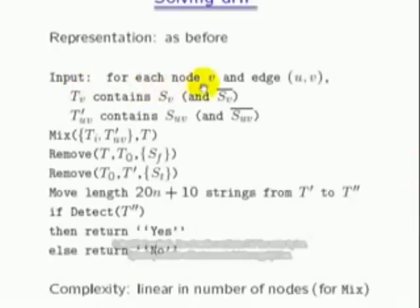Here's one. Input for each node V and edge (U,V). T_V contains S_V and S̄_V. I don't know this math, I'm not real good at math, but look at this. Indeed, it becomes painfully clear over the next couple of seconds that you don't understand this math. Did it ever occur to you that maybe if you don't understand it, you shouldn't be citing it as evidence? Contains, and then mix, blah blah blah, look at this mathematics, remove, remove. Move length 20n plus 10 strings from T' to T''. If detect T'', then return yes, else return no.